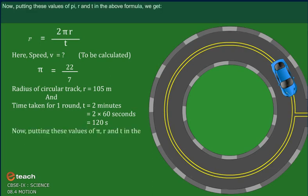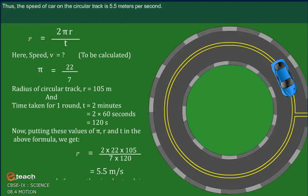Now, putting these values for π, r and t in the above formula, we get v = (2 × 22 × 105) / (7 × 120) = 5.5 meters per second. Thus, the speed of the car on the circular track is 5.5 meters per second.